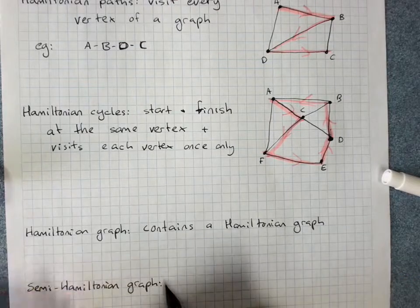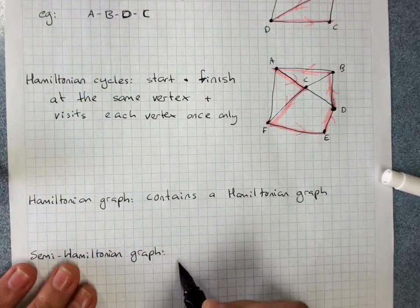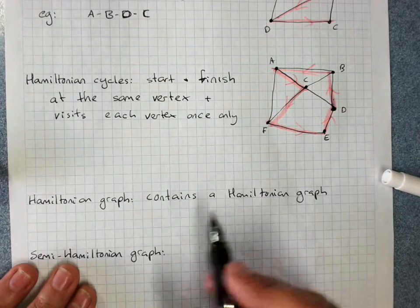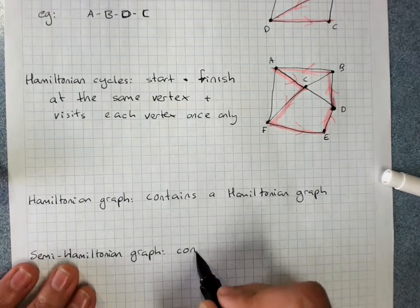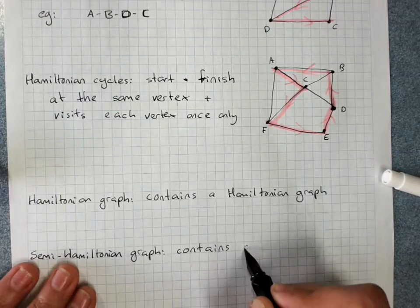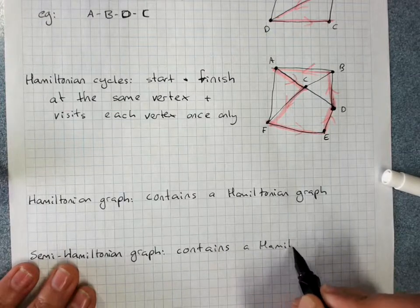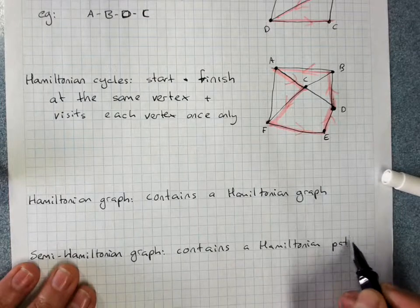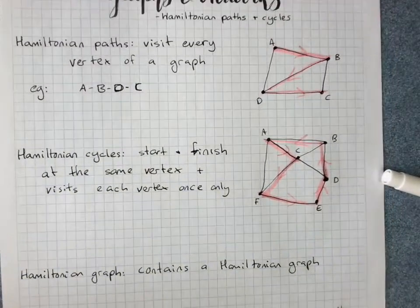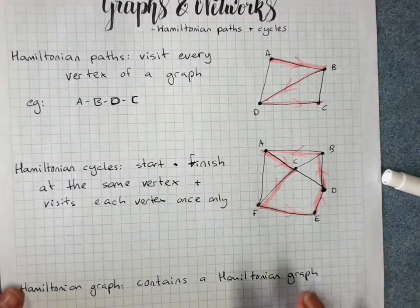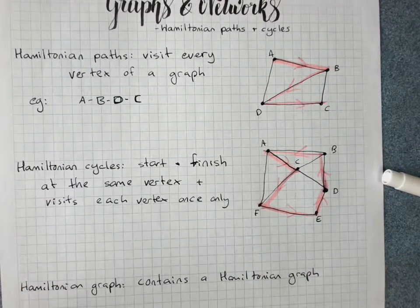If it contains a Hamiltonian path but not a cycle, it's semi-Hamiltonian. Now unfortunately, there's no nice easy rule as there is with Eulerian graphs. We just have to work it out by inspection.